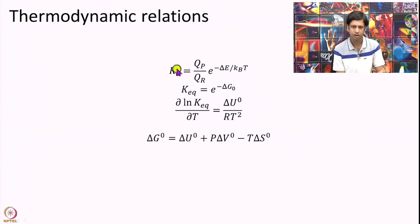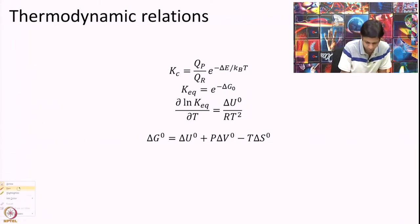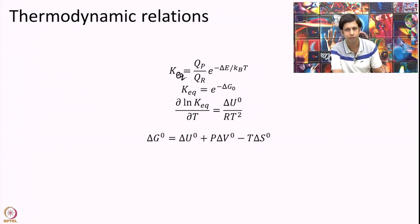One that we had already derived is that K equilibrium is ratio of partition functions into exponential of delta E over KT where delta E is difference of potential energies. K equilibrium can be written as e to the minus delta G not over KT. That is another relation from thermodynamics that we are not deriving we are just stating.